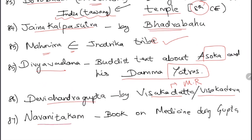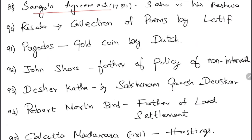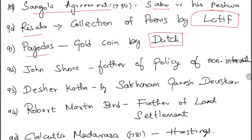Navaneetakam was a book written on medicine during the Gupta period. Sangola Agreement was written in 1750 between Shahu and his Peshwa — by that time real power rested with the Peshwas. Risala is a collection of poems written by Latif. Pagodas were gold coins used by the Dutch.